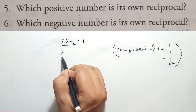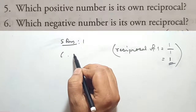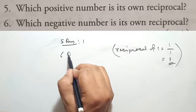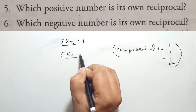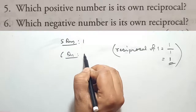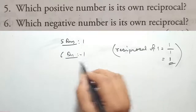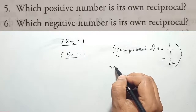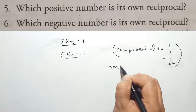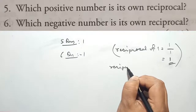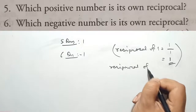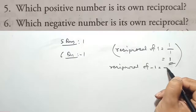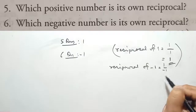Question 6: Which negative number is its own reciprocal? The answer is minus 1. In the same way, when we find the reciprocal of minus 1, it equals 1 by minus 1.